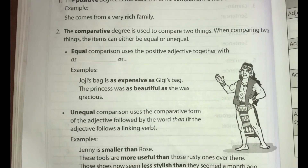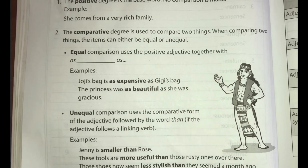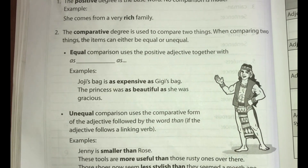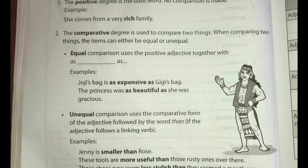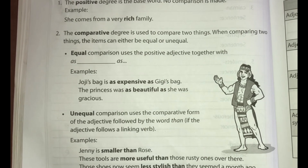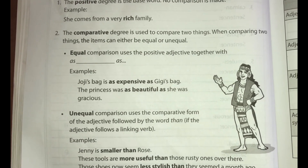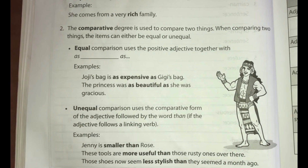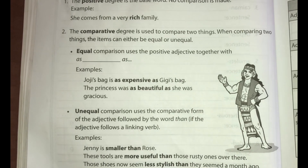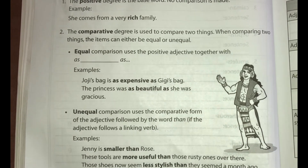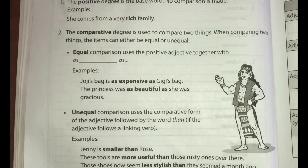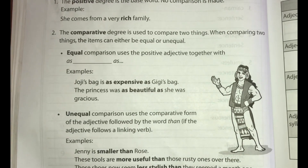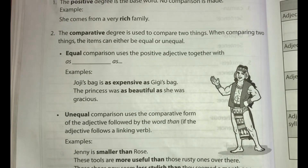Unequal comparison uses the comparative form of the adjective followed by the word 'than,' if the adjective follows a linking verb. Examples: Jenny is smaller than Rose. These tools are more useful than those rusty ones over there.